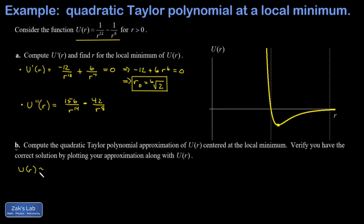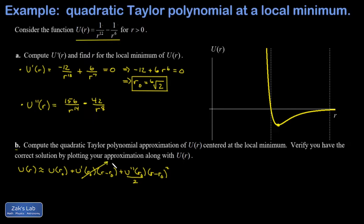As a quick reminder, a quadratic Taylor approximation says u(r) ≈ u(r₀) + u'(r₀)(r − r₀) + u''(r₀)/2 · (r − r₀)². The linear term vanishes here because u'(r₀) = 0 at the local minimum. We still need to compute u(r₀) and u''(r₀) to write down the full Taylor polynomial.